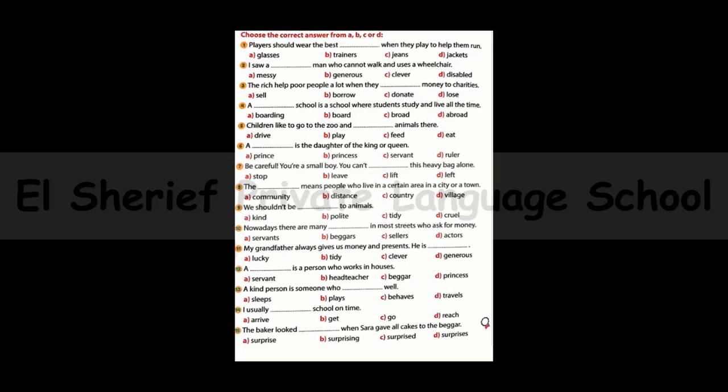Number five: Children like to go to the zoo and ___ animals there. The answer is easy — children like to go to the zoo and feed animals there.